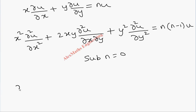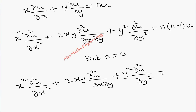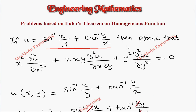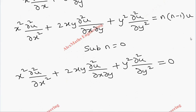...plus y² times ∂²u/∂y² equals 0. So what we have to prove, we got it using Euler's theorem.